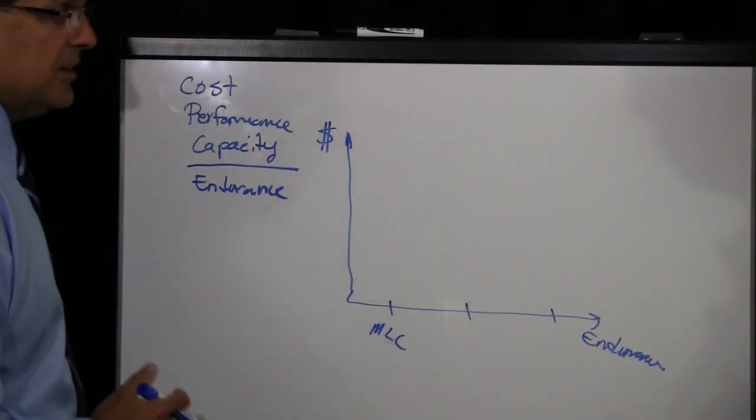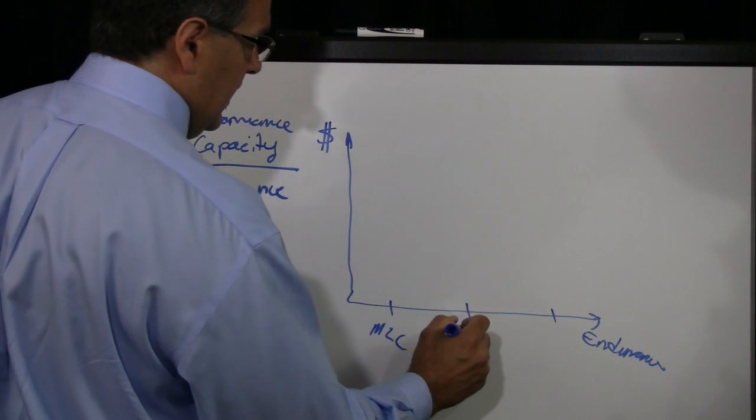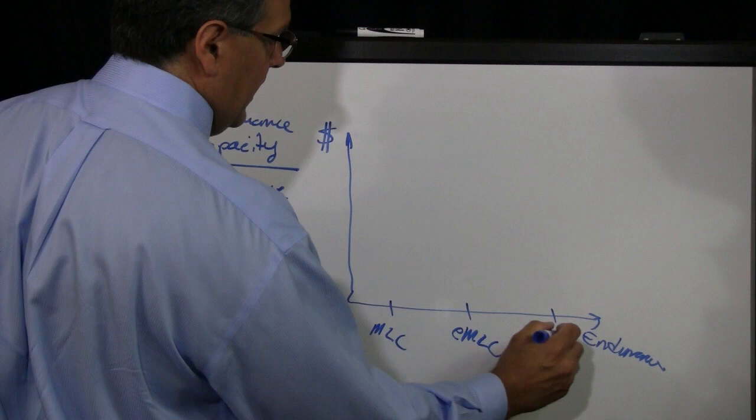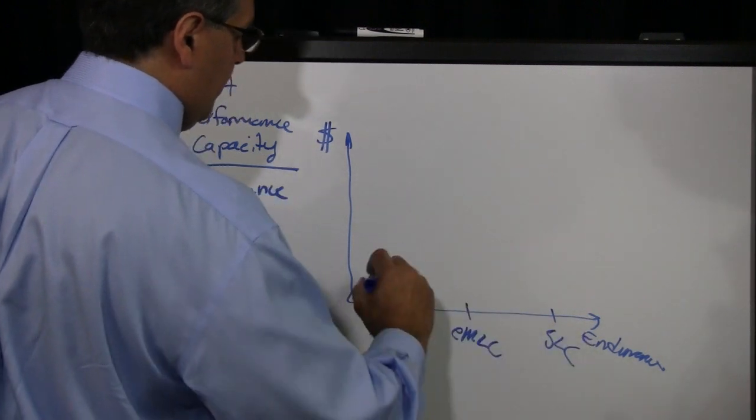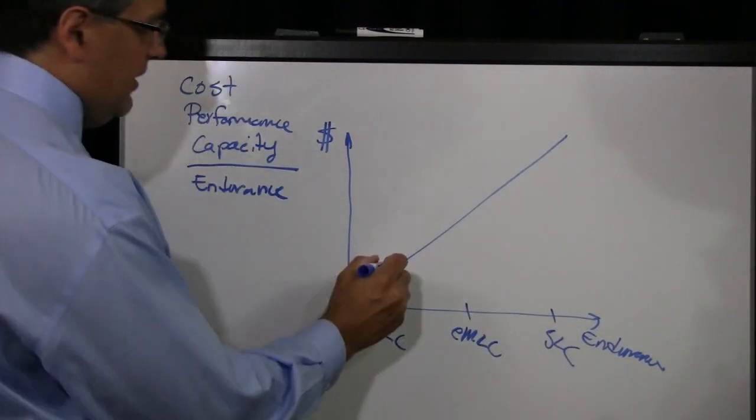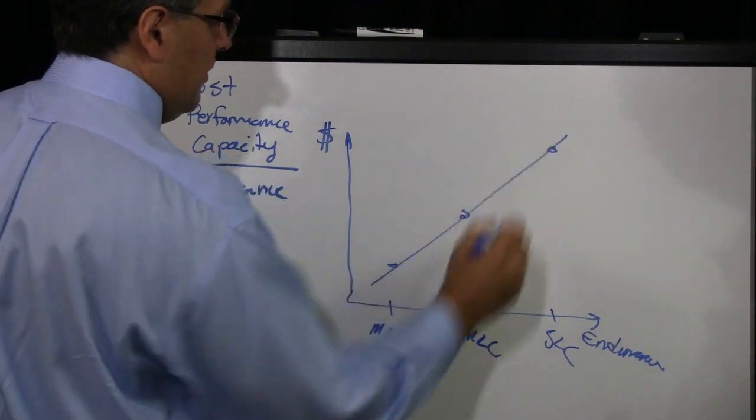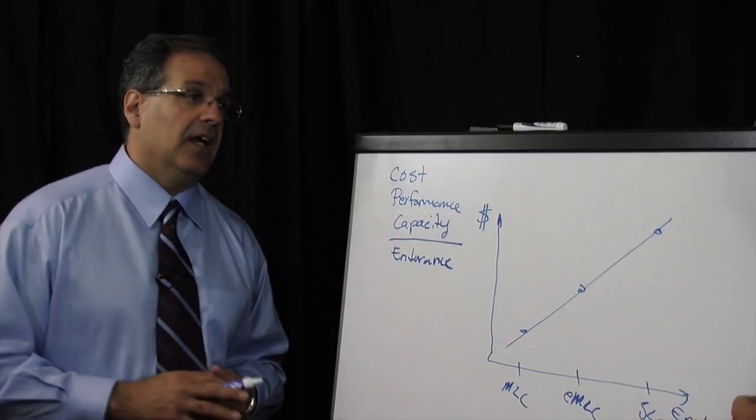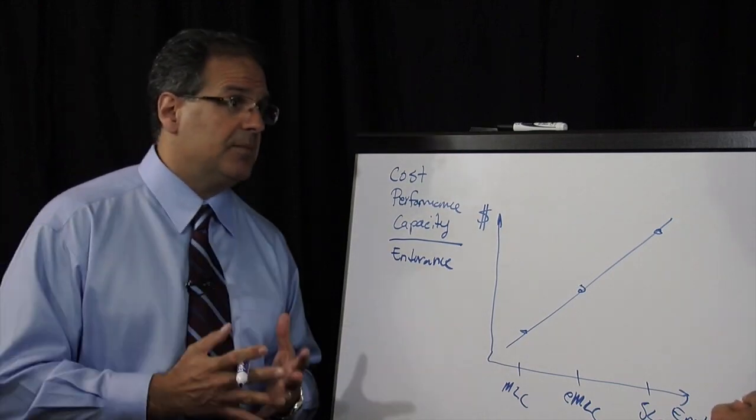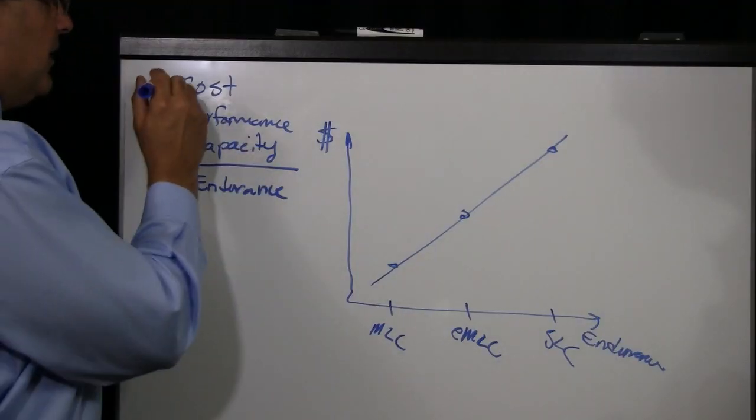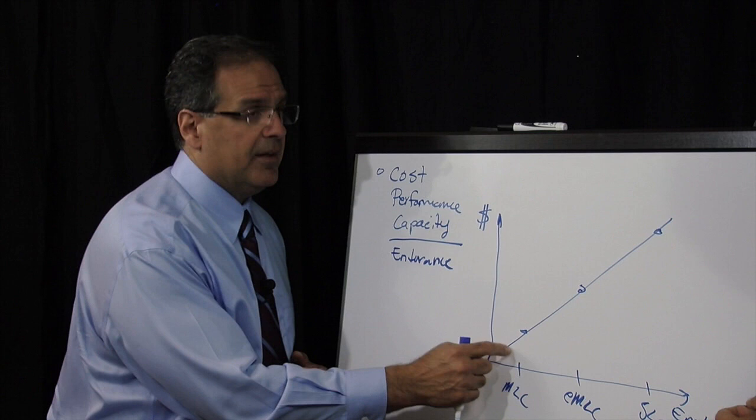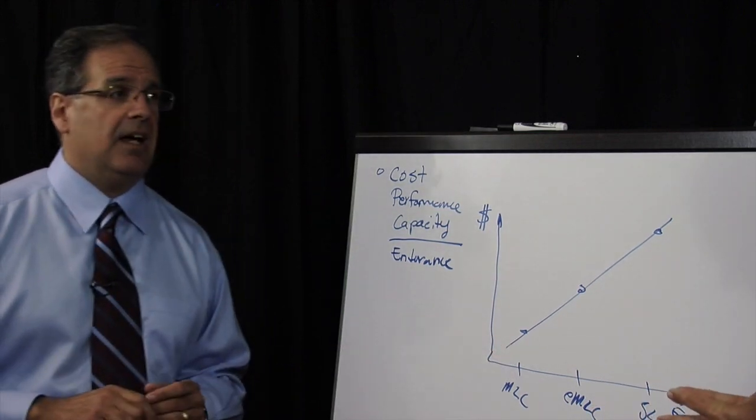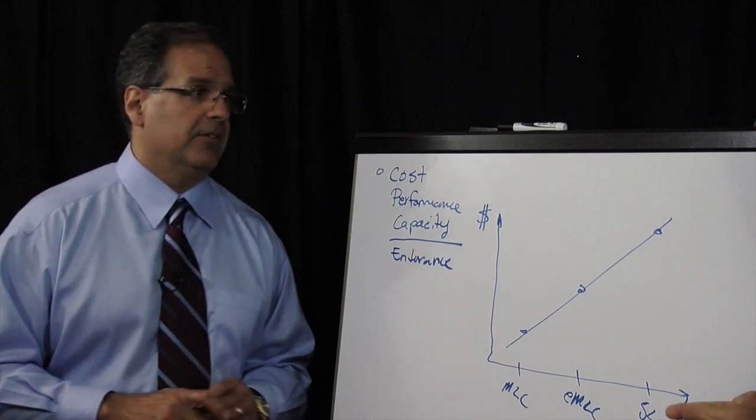It's mostly used for consumer applications. And then there's something called EMLC. And then something called SLC, a single level cell. And if I look at these, it's a very clear trend, whereas you go up in endurance, you go up in cost. And of course, one of the biggest mistakes that people make is that they've got cost always first on the list, and it dominates. And they buy the lowest cost SSD, but it may not necessarily have the right endurance for their application.